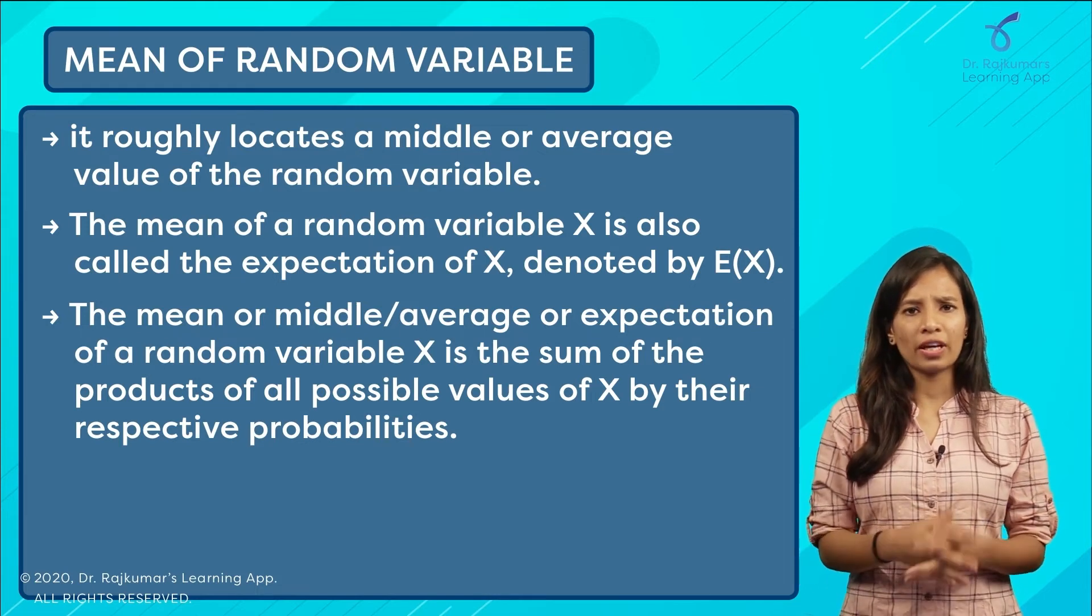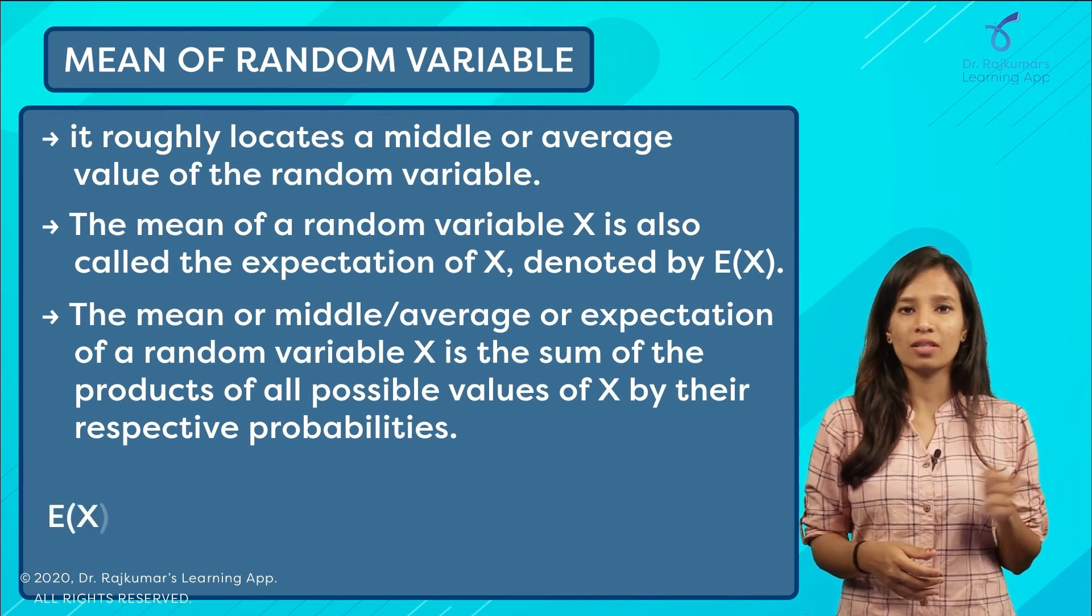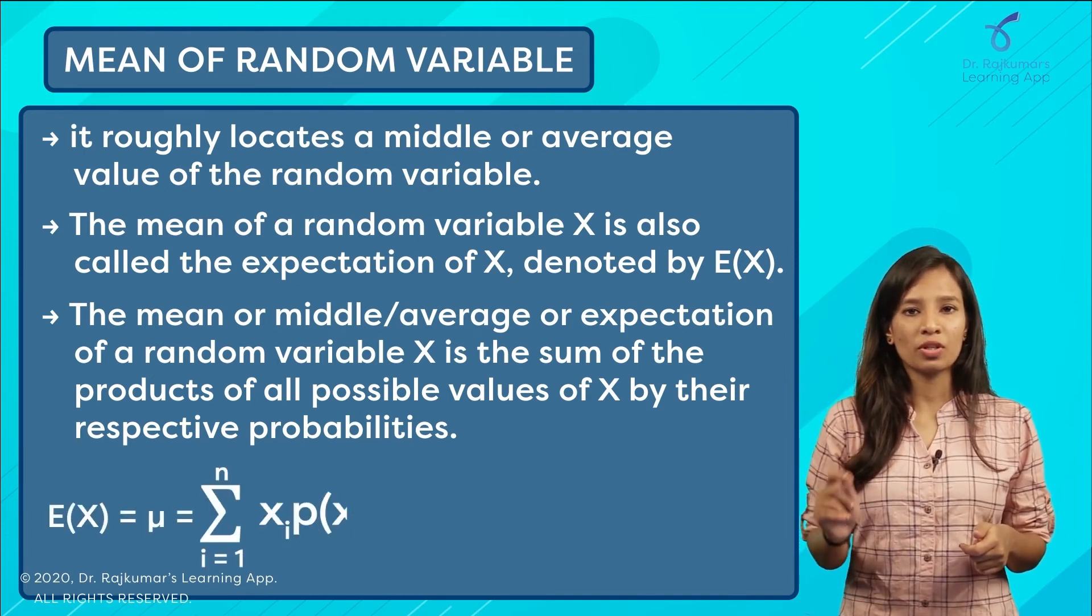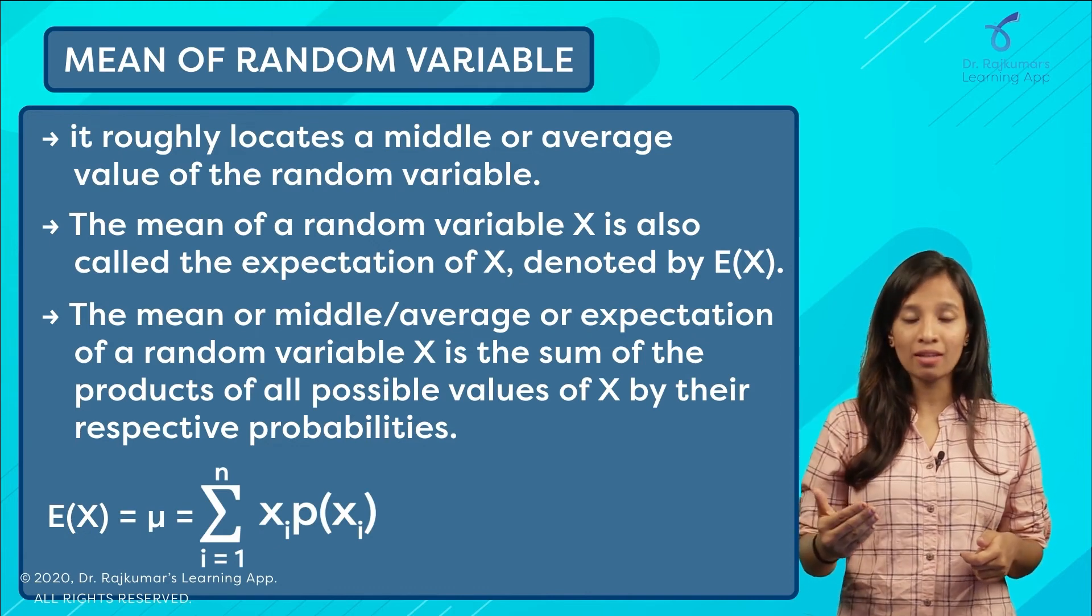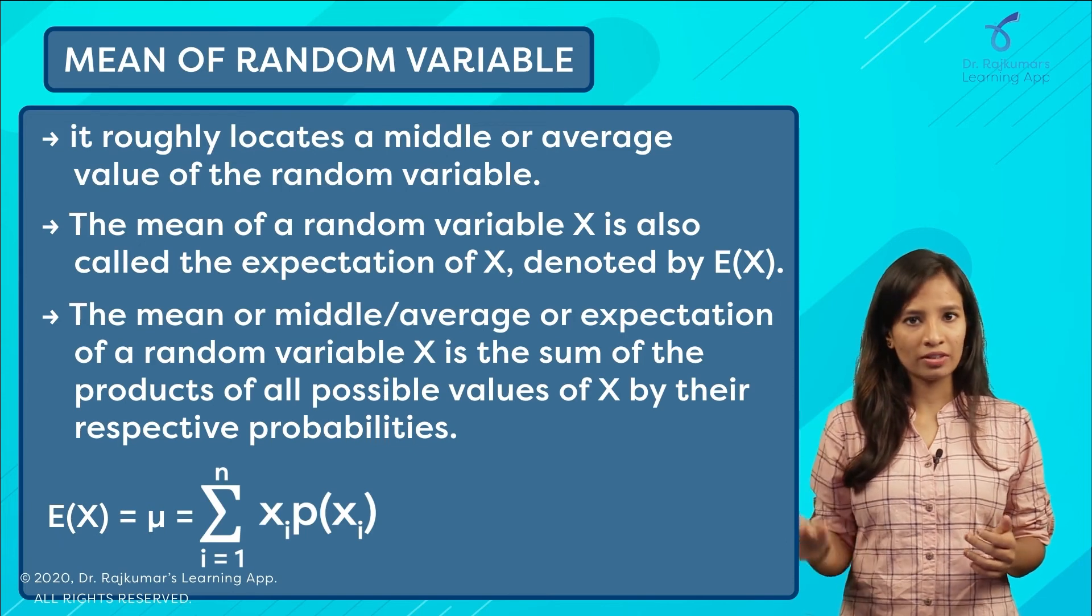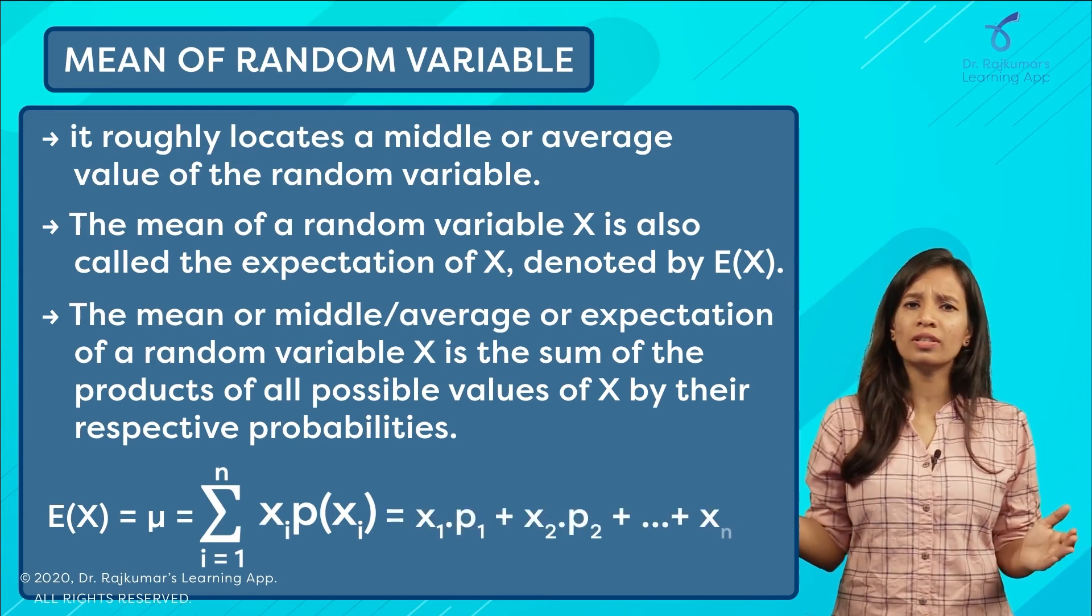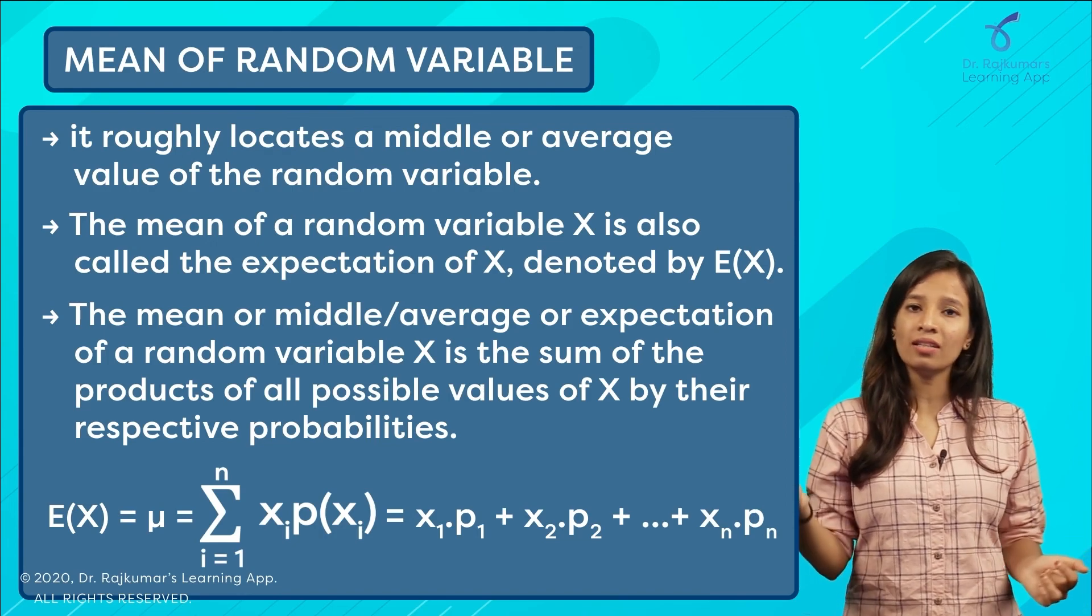For a final conclusion, mean can be given as E(x) equals mu equals summation over i equals 1 till n, xi into p of xi. Here we can further write it as x1 into p1 plus x2 into p2, and so on till however many you have, that is xn into pn.